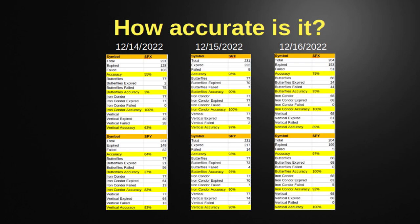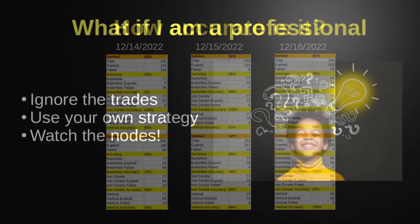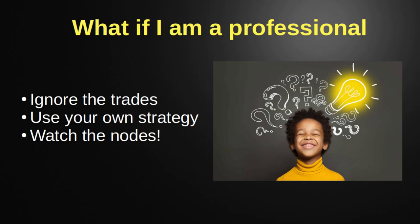These accuracy numbers assume you're going to ride that trade from the moment you open it all the way to expiration. What if you're a professional? This is actually in a few groups with professionals. The Axe Options group is full of professional traders. They still use Magic 8-Ball as an indicator — they ignore the suggested trades and use their own strategies, but they watch the volume nodes and the predictions to see where the market is going. Even as a professional, you can use this.